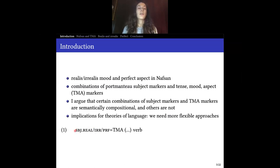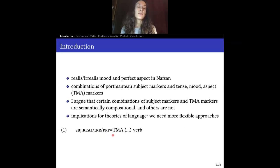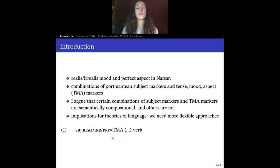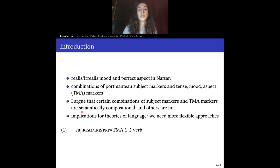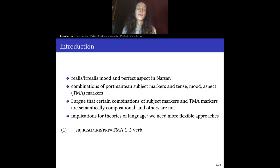This is just sort of a schema. We have these markers that denote person and number of the subject, and at the same time they also denote either realist mood, irrealist mood, or perfect aspect — or at least that is the analysis by Nick Thieberger, which we will reanalyze at this talk. These markers cliticize to the next available element, which can be another TMA marker. I'll be focusing on these combinations of the subject proclitics and other TMA markers, and I will claim that some of these constructions can be analyzed as semantically compositional, and others cannot — but are rather constructions in the sense of construction grammar. I will also argue that this has implications for theories of language, meaning we need more flexible approaches that allow for different kinds of theoretical approaches.